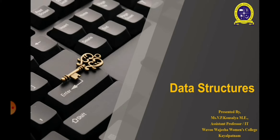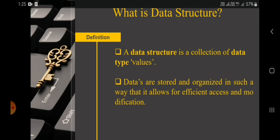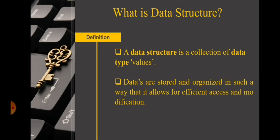Before getting into the topic, we want to know first what is data structure. What is data? The term data means a value or a set of values. A data structure is a collection of data type values. The data type value is a term which refers to a kind of data that may appear in a computation. For example, we can consider a data 34. Here 34 is termed as data and 34 is an integer type. That integer type is termed as a data type. A data structure is a collection of data type values where the data are stored and organized in such a way that it allows for efficient access and modification.